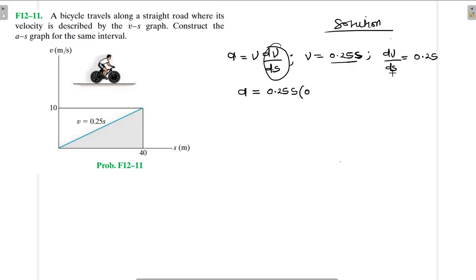If we have to multiply the two, 0.25 by s, we get 0.0625s.